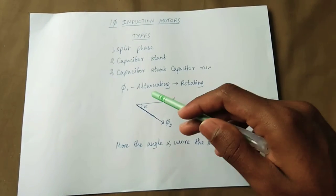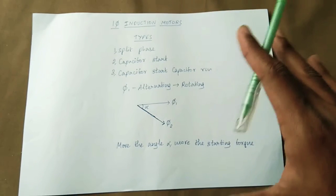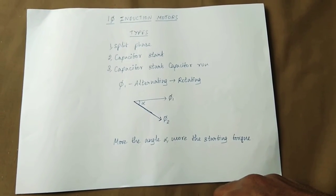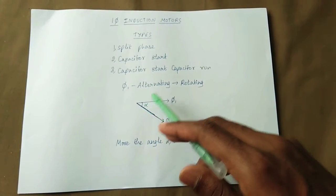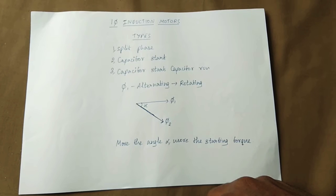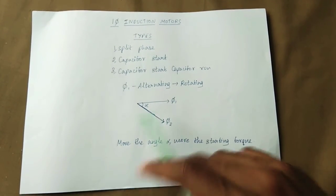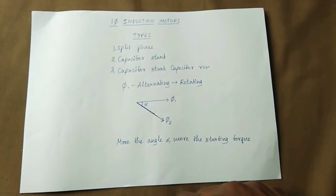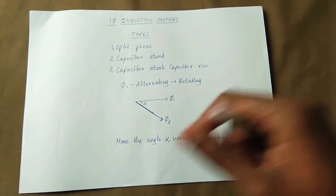What is the stator flux? If you have a self-starting motor, you can see the stator flux. If it is not self-starting, you cannot see the stator flux. First, we have a stator flux, and if we have another flux, we create a resultant stator flux.